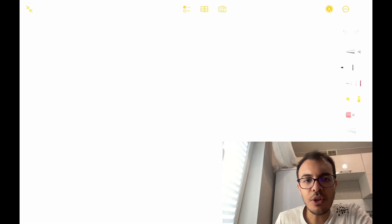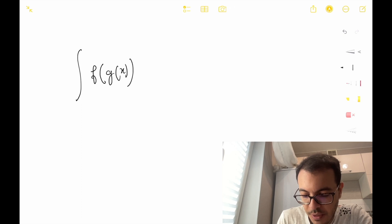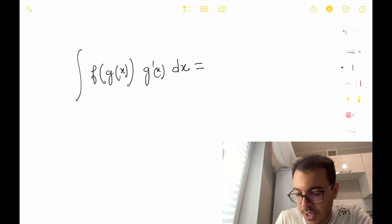Let's explore. Change of variables follows a simple formula. We have integral of f of g of x times g prime of x with respect to x, dx, equals the integral of f of u with respect to u.